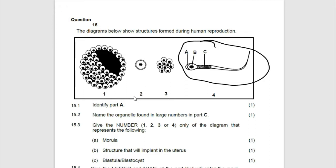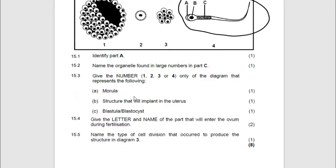Most especially if the line is not clear. Identify A, we have seen it's acrosome. Name the organelle found in large numbers in part C. We have seen it is mitochondria. Then they are saying give the numbers 1, 2, 3, 4 only on the diagram representing morula. Remember what is a morula and what is a blastula or a blastocyst. A morula is just a ball of cells. This ball of cells has no hole at all.